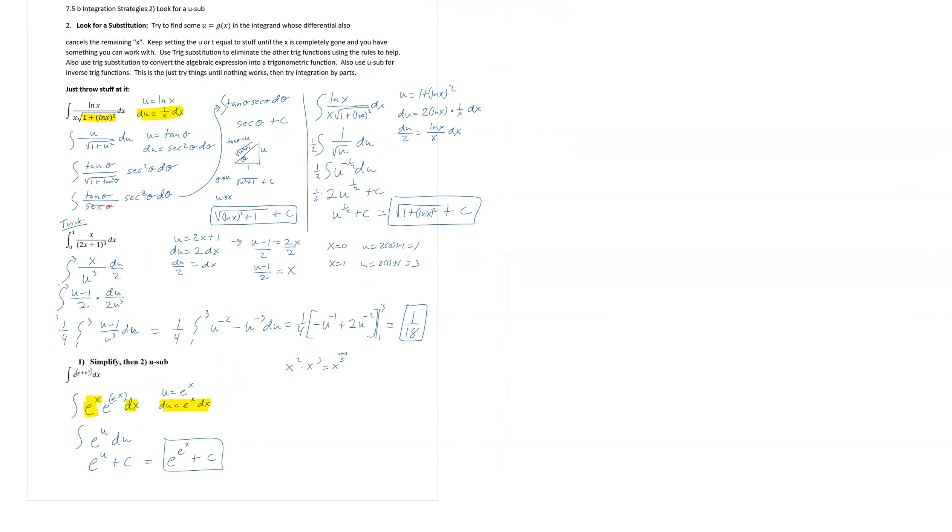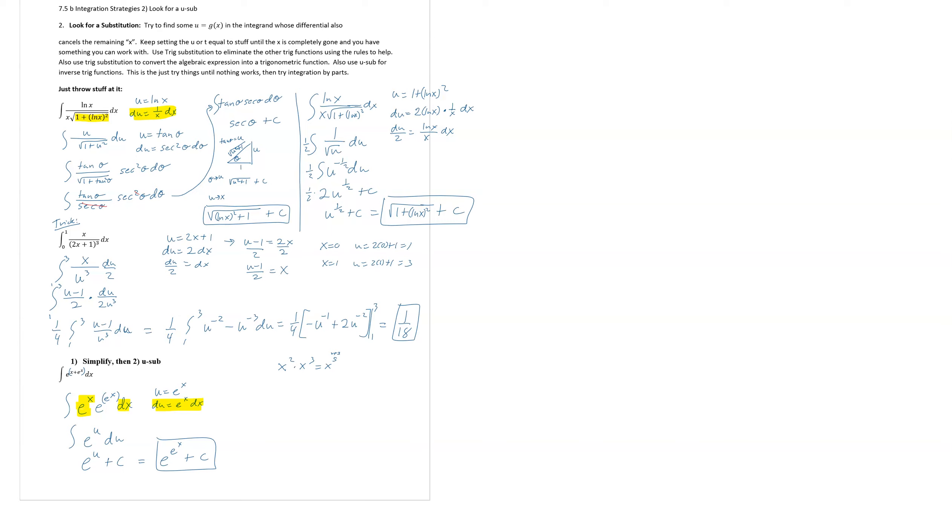But the whole point, again, of this is to just throw a u at it. Look at it and think, okay, what's on the inside? That's my best choice. And when I take the derivative of it, do I get what's left? That's what we're looking for. And if it is, you're good to go. See, so here we picked u equals ln of x. It got rid of everything perfectly fine. Here we did u equals 1 plus ln of x squared, and it got rid of everything. So both methods worked fine. You probably have your preference on which one you like. There you go. So keep watching.